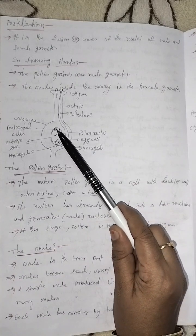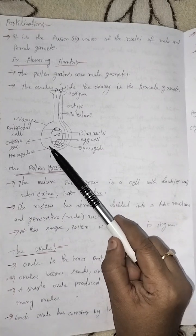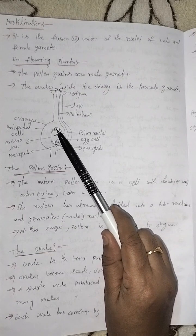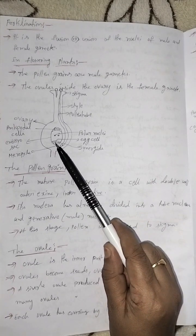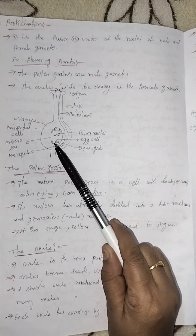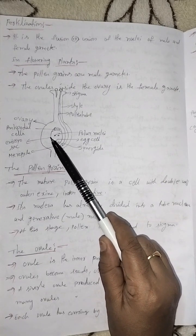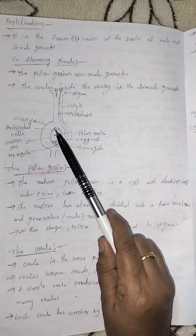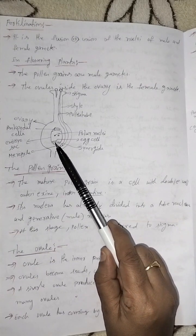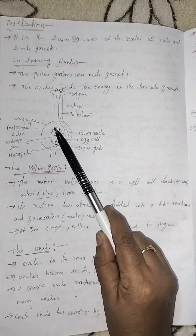In the embryo sac there are eight cells arranged as three plus three plus two. These eight cells are: three antipodal cells, one egg cell, two synergids, and two polar nuclei in the center. So the embryo sac contains antipodal cells, the egg cell, synergids, and polar nuclei.